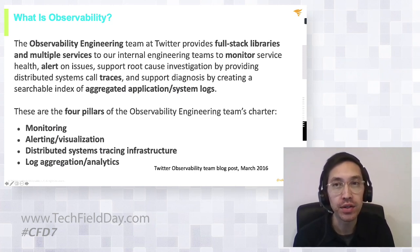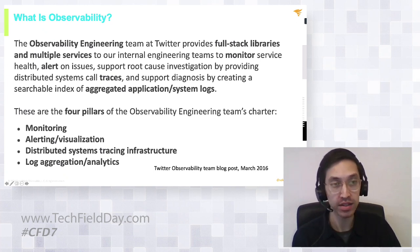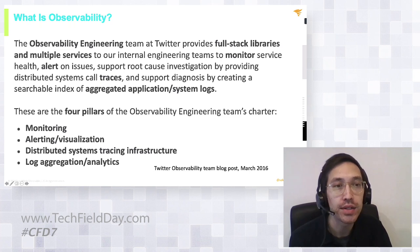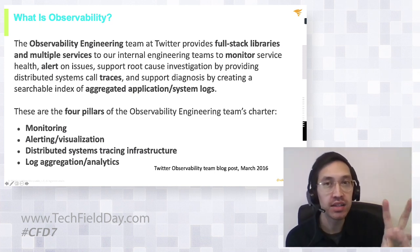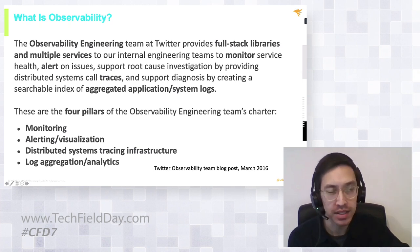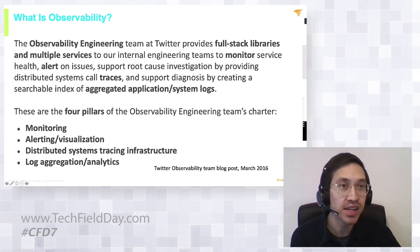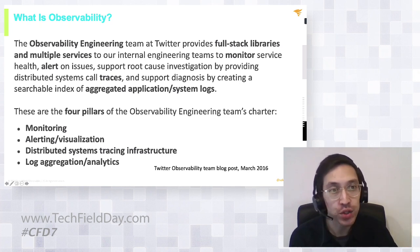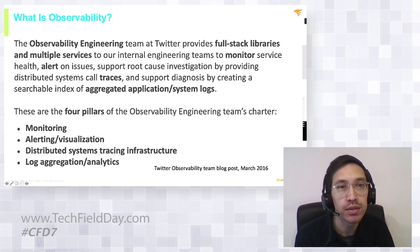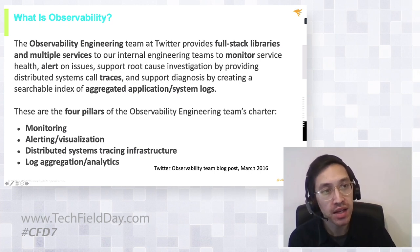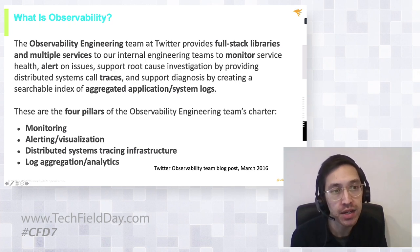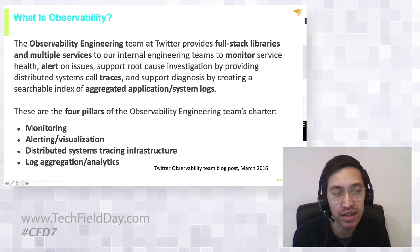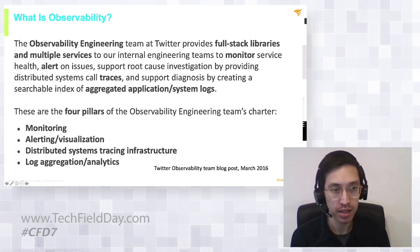The goal of the observability engineering team at Twitter was to provide full-stack libraries and services to collect infrastructure metrics, application metrics, and help support root cause investigation into distributed systems — called traces — as well as how to alert, visualize the infrastructure and metrics, and aggregate application logs. They defined four pillars of observability: monitoring with dashboards, alerts, and visualization; a distributed systems tracing system; and log aggregation.